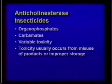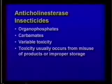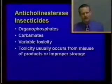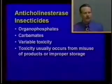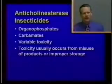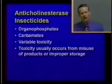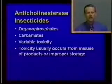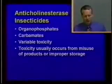The first subject we're going to cover is anticholinesterase insecticides — the organophosphate and carbamate insecticides. Organophosphates are derivatives of phosphoric acid; carbamates are derivatives of carbonic acid. These compounds have a wide range of toxicity. Some carbamates are toxic at as little as one milligram per kilogram, while some organophosphates can be dosed orally at several hundred milligrams per kilogram without causing problems. However, every compound should be treated with respect, as most toxicity seen in animals comes from misuse or improper storage.